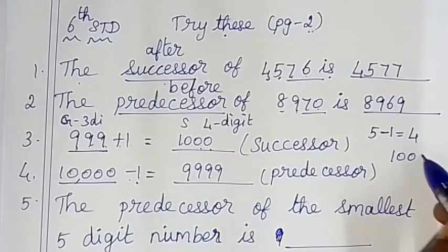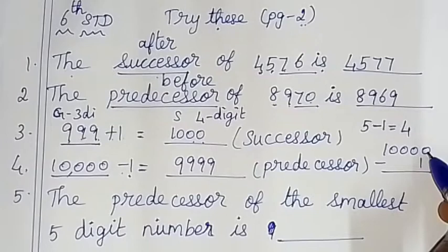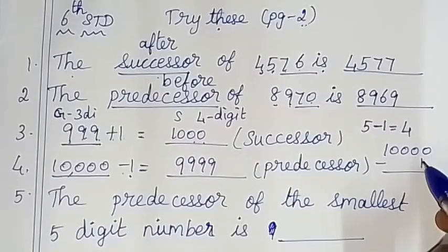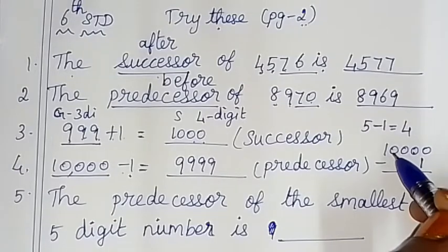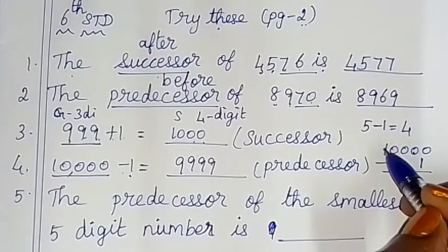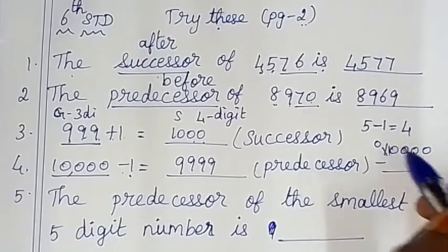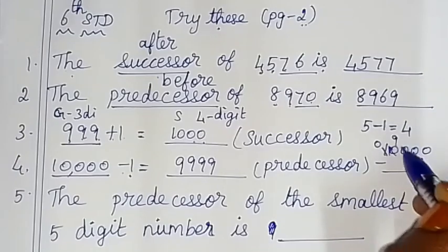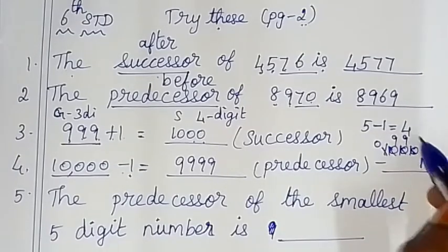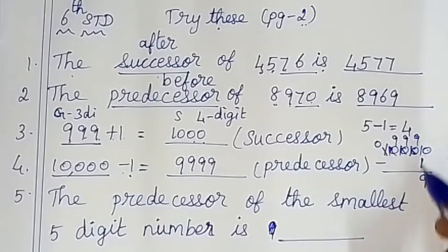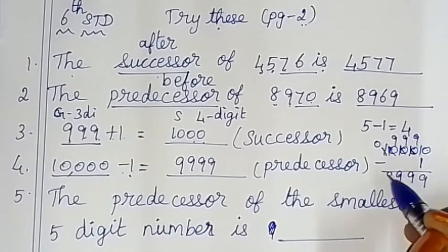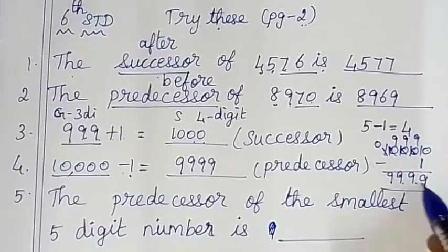If we have 10,000 and subtract 1, we borrow and work through the digits. Less 1 from the given number: if 10 becomes 1, then we get 9s — so the result is 9,999.